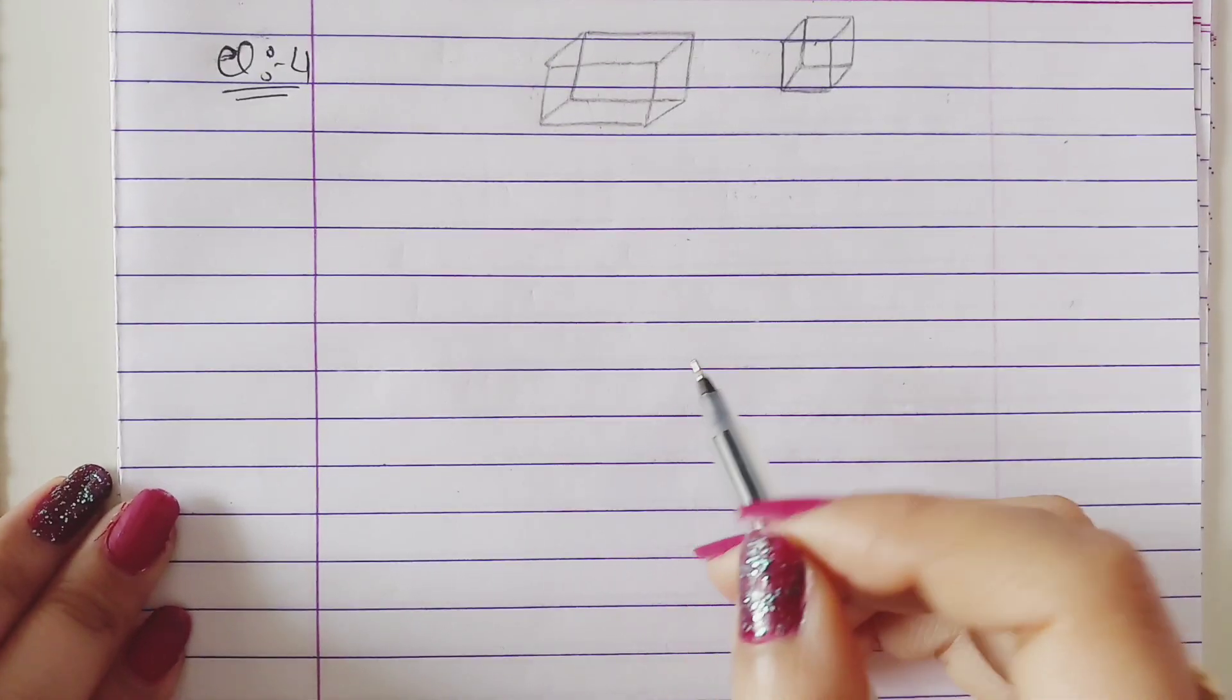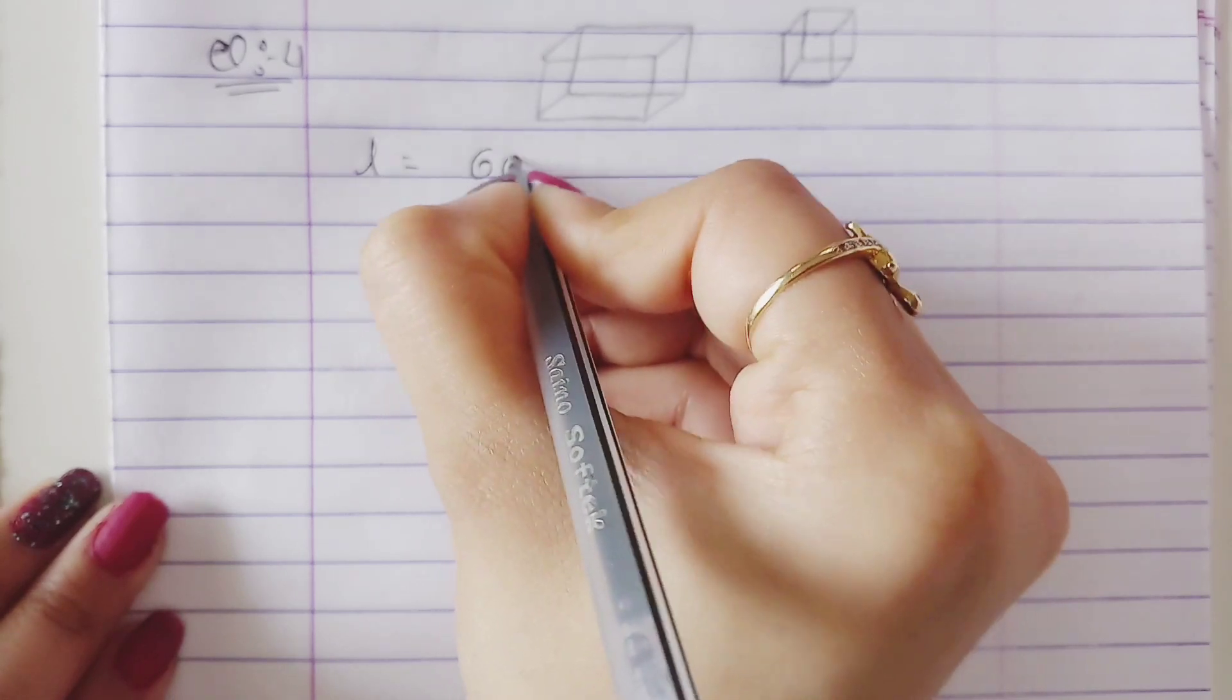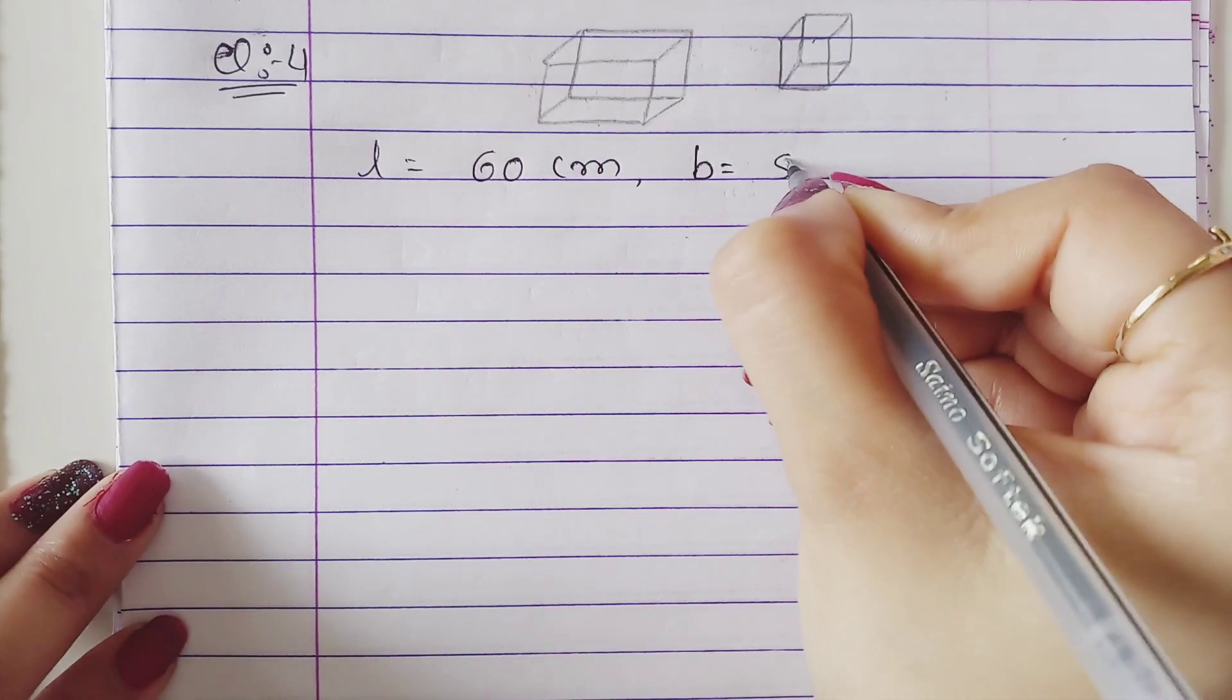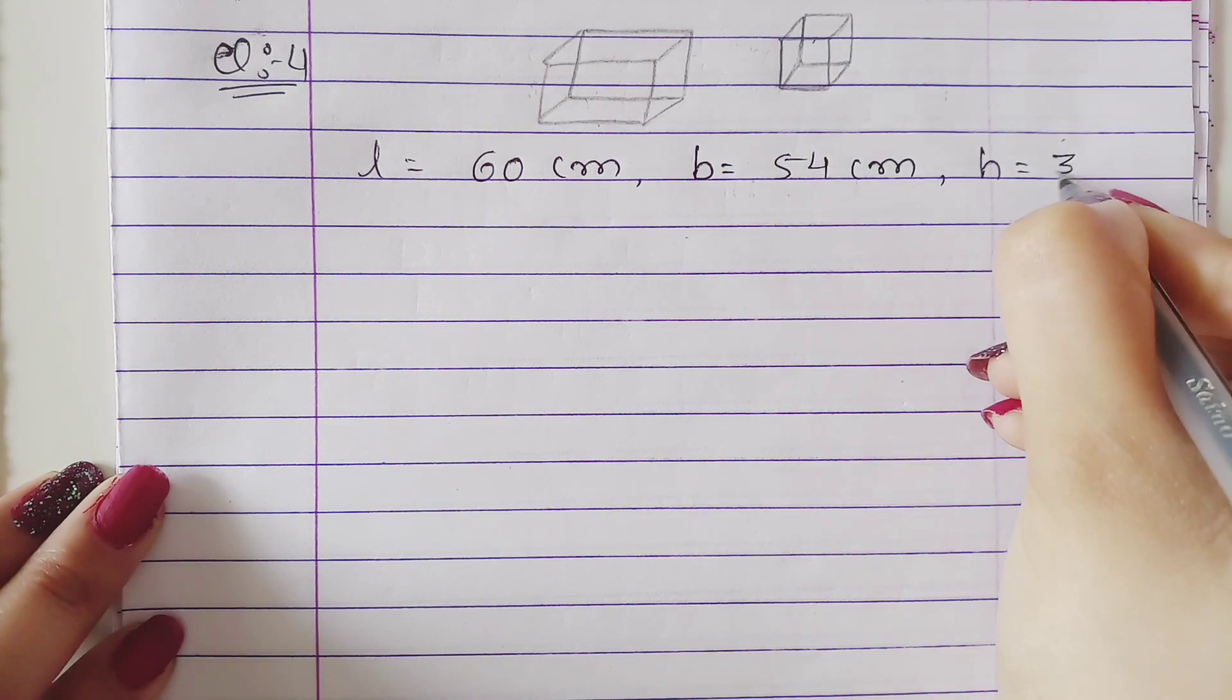So here we have length is 60 cm, breadth is 54 cm, and height is 30 cm.